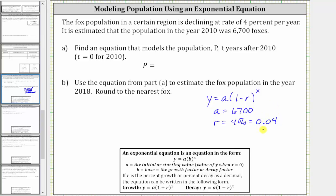Now we need to be careful because we're not using y and x as the variables, we're using P and t. This means our equation is going to be P equals 6,700 times the quantity one minus 0.04 raised to the power of t.